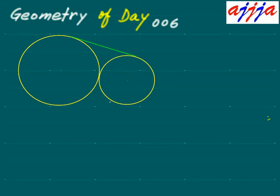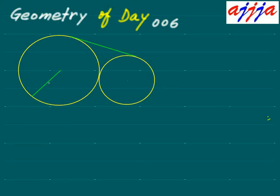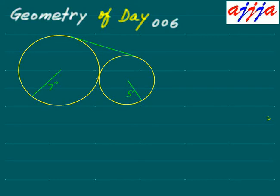We have two circles — one is bigger than the other. This radius is seven inches, and this one is five inches. So I can label this one seven inches and this one five inches. Then we put them together like this — one meeting point. We call these tangent circles. Tangent means touch.